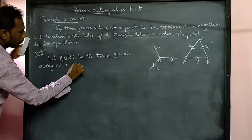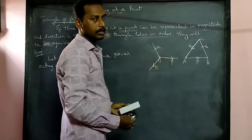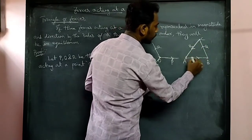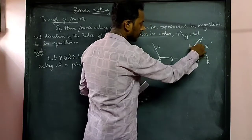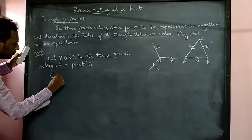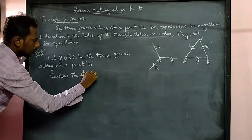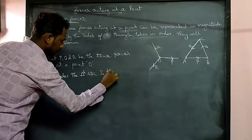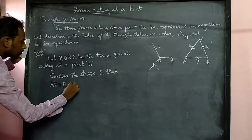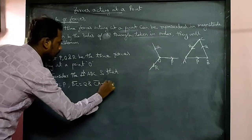Let P, Q, and R be the three forces acting at point O. The forces are in order and the triangle's three sides represent them: side AB represents P, side BC represents Q, and side CA represents R. Consider the triangle ABC, so that AB equals P, BC equals Q, and CA equals R.